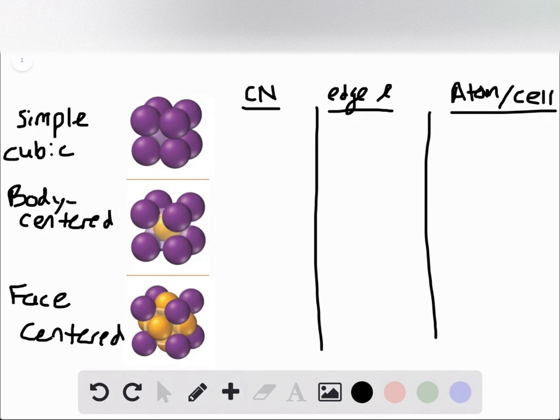So first let's consider coordination number. Within the simple cubic cell, let's consider this atom first. I'm going to draw a zero around it there. And the coordination number refers to the number of atoms that are in immediate proximity to an atom of interest.